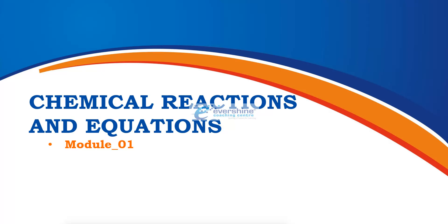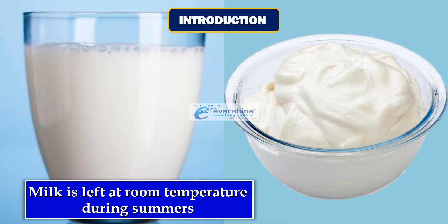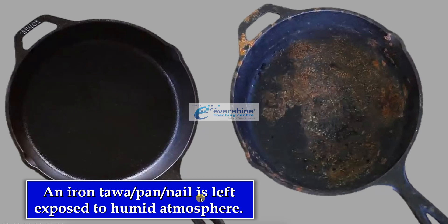As we know that most of the substances around us undergoes various changes. Some are called as physical change and some of them we call it as chemical change. Let me see a few examples to see or to check how the chemical reaction takes place. When the milk is left at room temperature during summer, this is before and this is after. And iron tawa, pan or nail is left exposed to humid atmosphere. As you can see, this is the iron tawa before exposing to the atmosphere and this is after it is exposed to atmosphere. You can compare, what is happening here, some changes are visible.